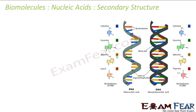For DNA, the secondary structure is a double-stranded helix, a structure proposed by James Watson and Francis Crick. In DNA, two nucleotide chains are bound to each other and held together by hydrogen bonds. You can see chain one and chain two held together by hydrogen bonding between the bases in the middle.